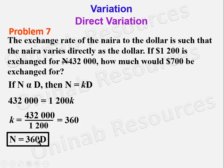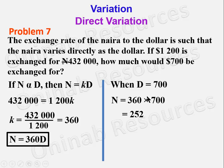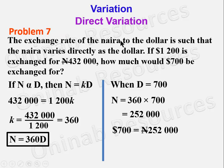This tells us that $1 is equivalent to 360 naira. We now find the value of N when D is 700: N equals 360 times 700. 36 times 7 gives 252, then add the three zeros, giving 252,000. So $700 will be exchanged for 252,000 naira. That's the end of the solution to problem 7.